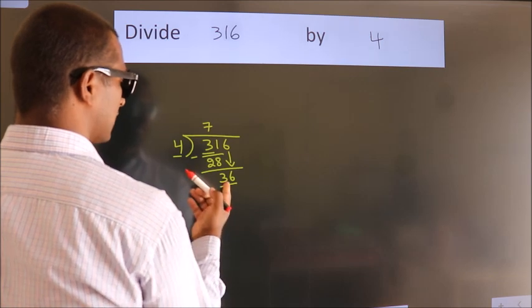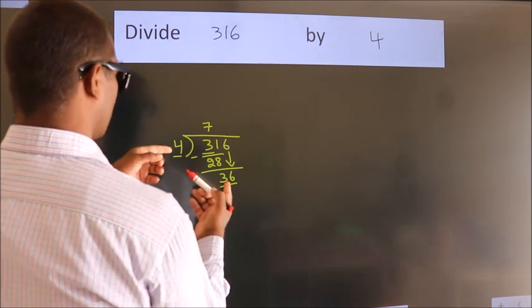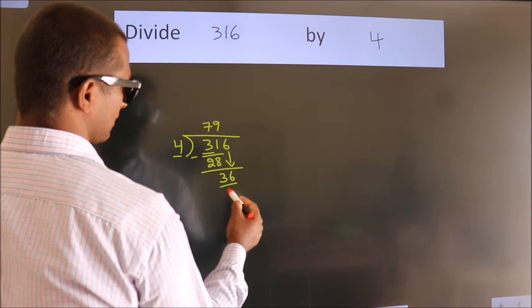So, 36. When do we get 36 in the 4 table? 4 times 9 equals 36.